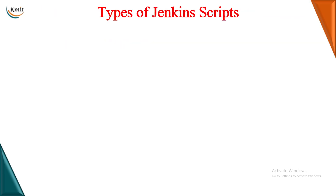Let us see what are the different types of Jenkins scripts we have. We basically have two different types. The first one is called as a declarative pipeline. This declarative pipeline is very simple and very structured. It is used for very small tasks. As a beginner, if you want to learn scripts in Jenkins, it would be very easy to understand and write this declarative pipeline. It is best for straightforward tasks.